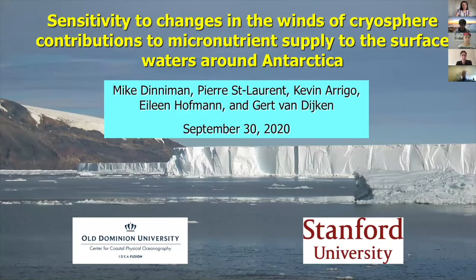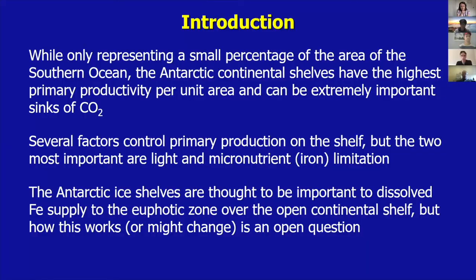I'm going to present some work we've been doing on how ice shelves affect nutrient supply for primary production around Antarctica. The Antarctic continental shelves are only a small percentage of the area of the Southern Ocean, but they have the highest primary productivity per unit area and can be really important sinks of carbon dioxide. The two factors that matter most for controlling primary production on the shelf are light limitation and micronutrient limitation — specifically dissolved iron.